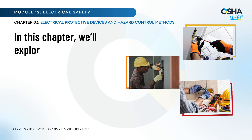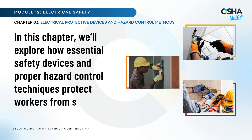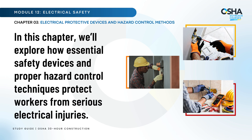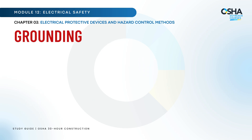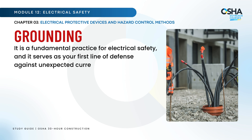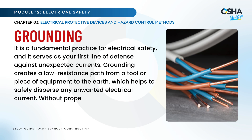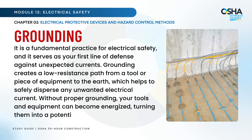In this chapter, we'll explore how essential safety devices and proper hazard control techniques protect workers from serious electrical injuries. First, let's talk about grounding. It is a fundamental practice for electrical safety and serves as your first line of defense against unexpected currents. Grounding creates a low-resistance path from a tool or piece of equipment to the earth, which helps to safely disperse any unwanted electrical current. Without proper grounding, your tools and equipment can become energized, turning them into a potential hazard.